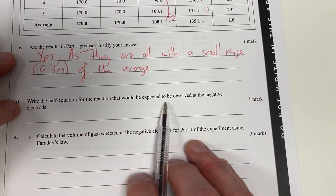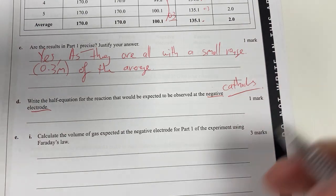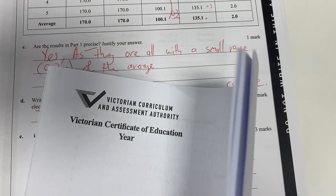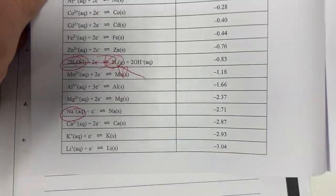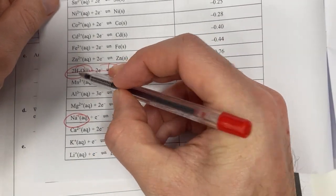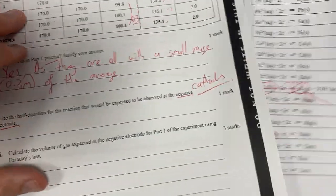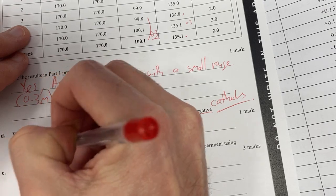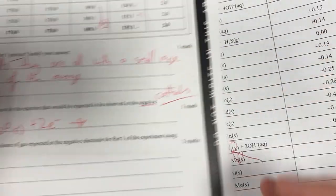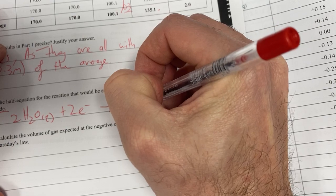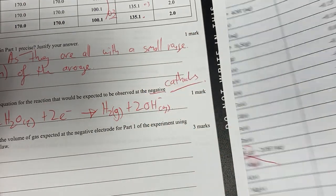Write a half equation for the reaction expected to observe at the negative electrode. Negative electrode is my cathode. What is happening in this cell? I'm electrolyzing sodium chloride. I identify sodium and water present. It's an aqueous solution. So therefore this is going to react at my cathode. So I should have 2H2O liquid plus two electrons. This is going to produce hydrogen gas H2 and 2OH negative aqueous.